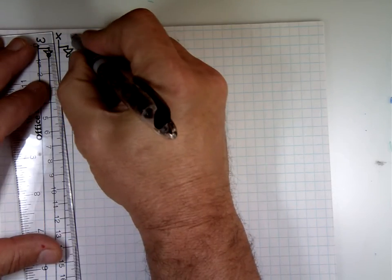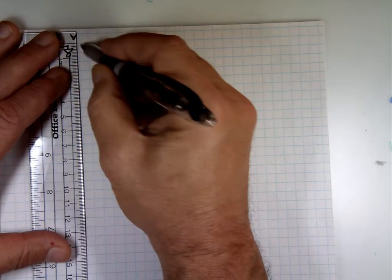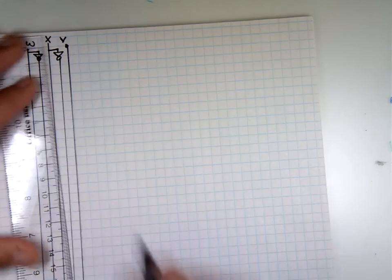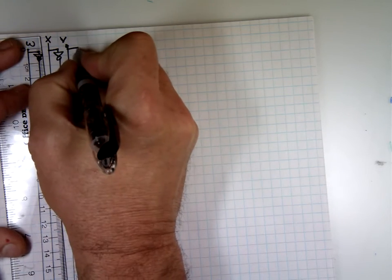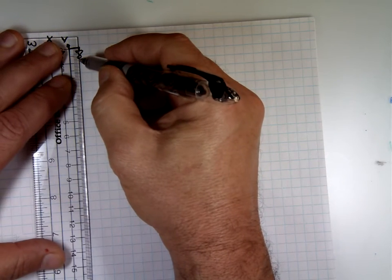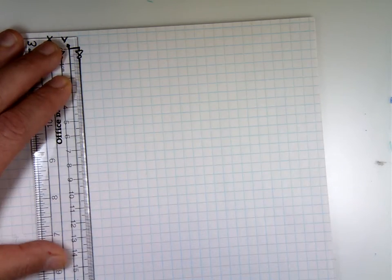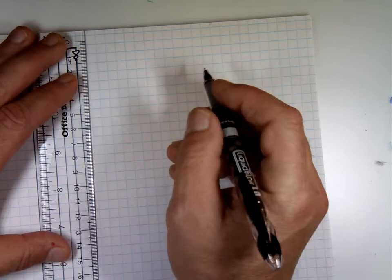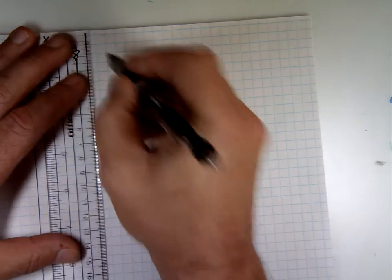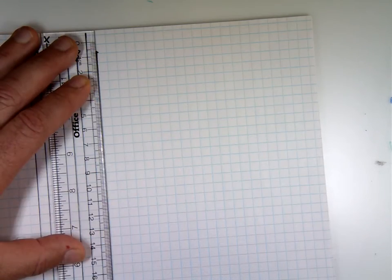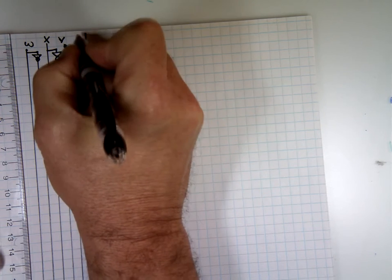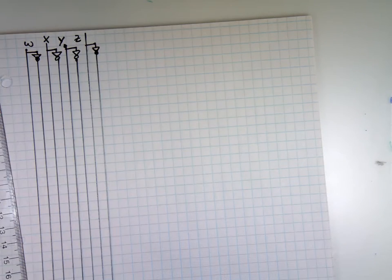This is Y, the next one — that's the other input. This is Y naught. And the last one is Z. So we have W, X, Y, and Z — four inputs.